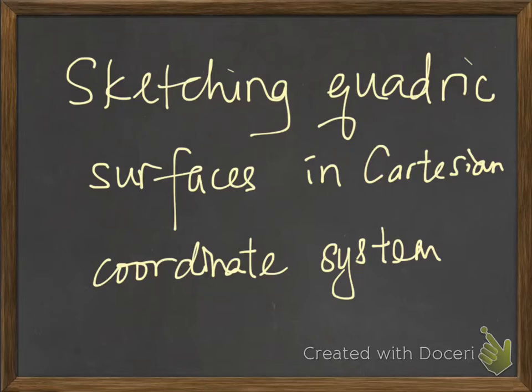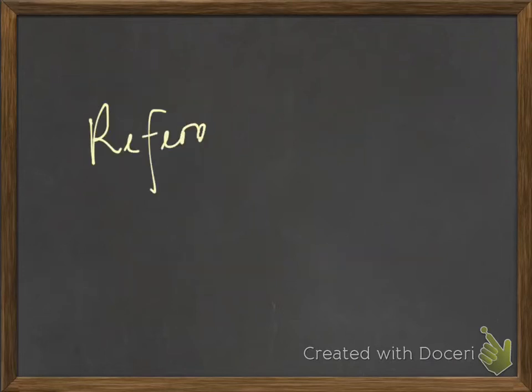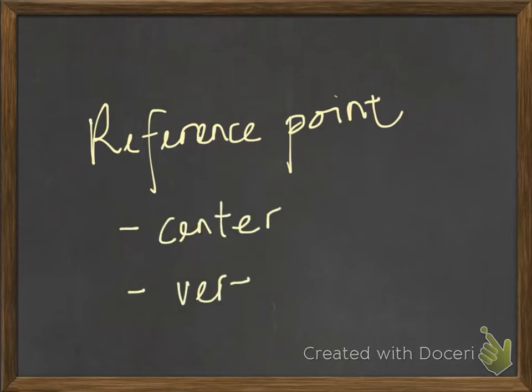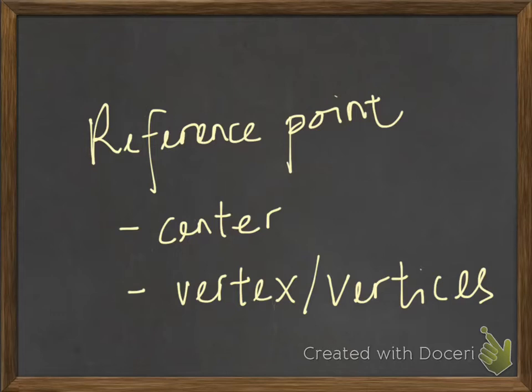Now, to sketch these quadric surfaces in the system, you will need what we call a reference point. And this reference point can be a center or vertex, or vertices if the center is not available.